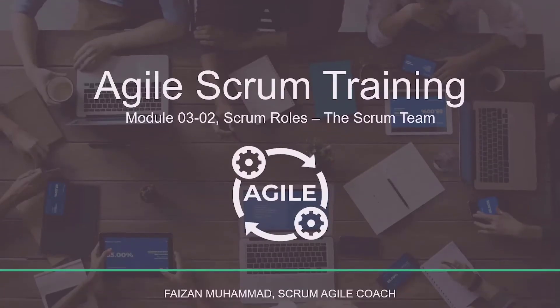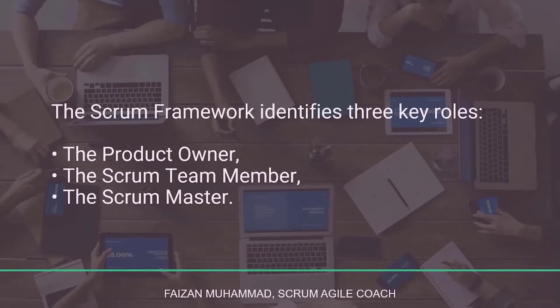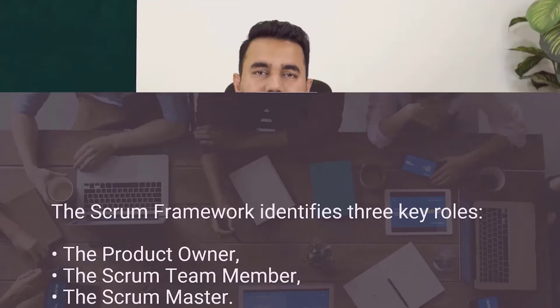Hello and welcome to this module on scrum roles and the agile scrum team. The scrum framework identifies three key roles: the product owner, the scrum team member, and the scrum master. A successful scrum organization needs individuals with all these skill sets. These roles are indispensable, not replaceable, and should not be combined with other scrum roles or functions.